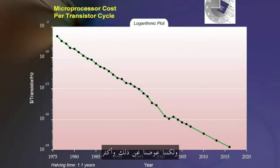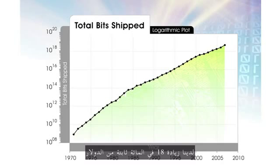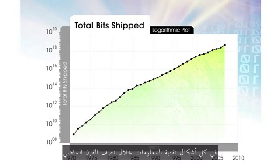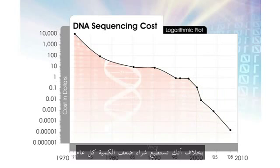That 50% deflation rate is also true of other examples like DNA data or brain data. But we more than make up for that — we actually ship more than twice as much of every form of information technology. We've had 18% growth in constant dollars in every form of information technology for the last half century, despite the fact that you can get twice as much of it each year.